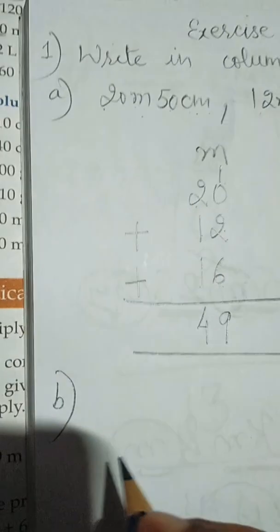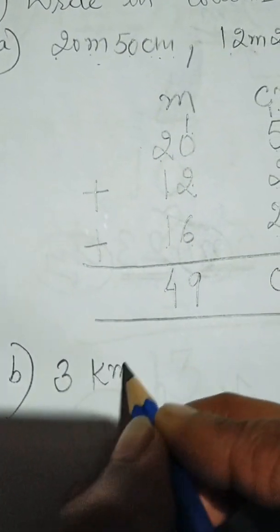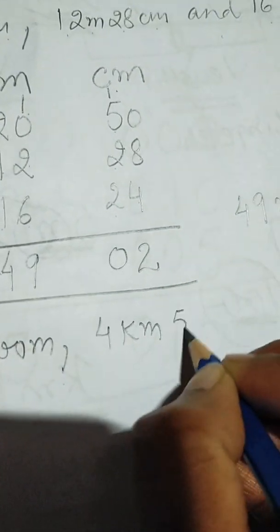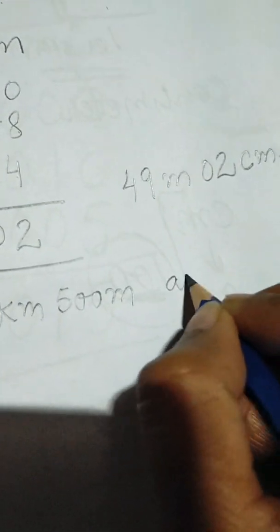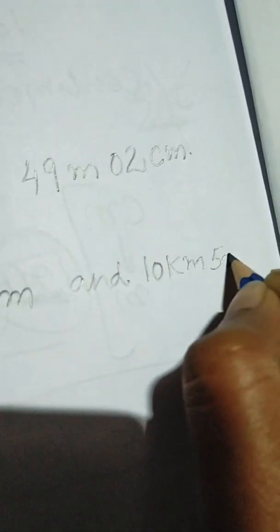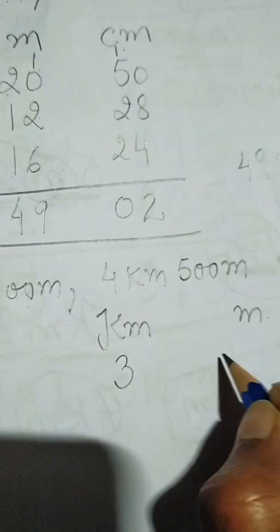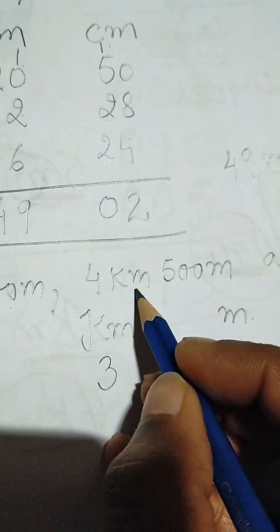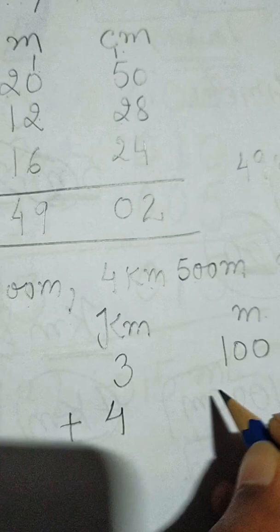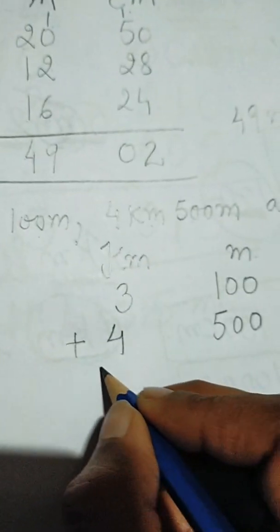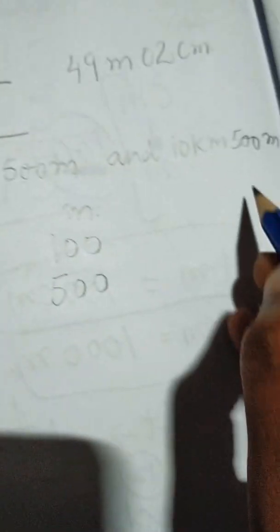Now let's move to part B. The statement is 3 kilometer 100 meter, 4 kilometer 500 meter. We will write kilometer and meter. First statement is 3 kilometer 100 meter, then 4 kilometer 500 meter, and after that 10 kilometer 500 meter.